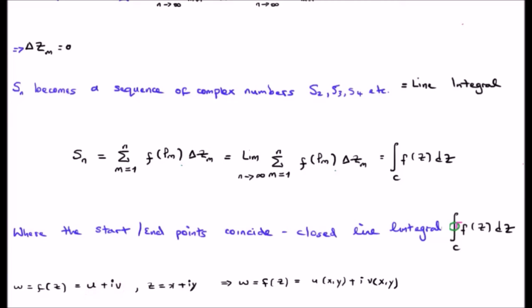But it's a function of z, and z is a function of x, the real component, and y, the imaginary component. Putting this together, it allows us to rewrite w, which is our complex function, as u plus i times v, where u is a function of x and y, and so is v.